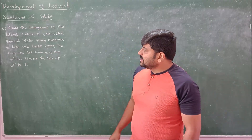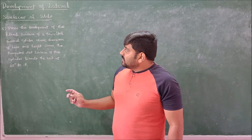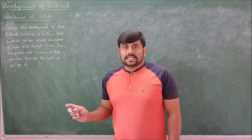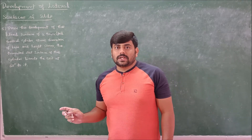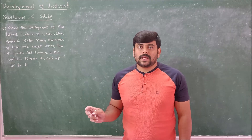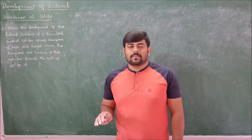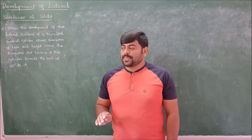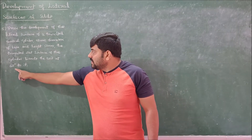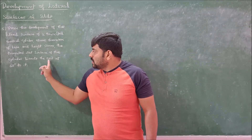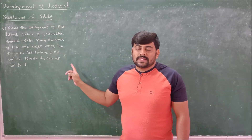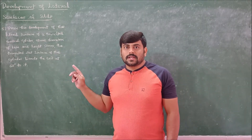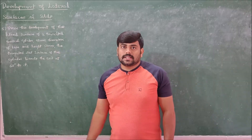We have a vertical cylinder and the development involves a truncation. If the cutting plane is inclined at a certain angle to the base or horizontal plane, we get a truncation. If it is parallel to the base, we get a frustum. The cutting plane is inclined at 60 degrees to the axis, which means it is inclined at 30 degrees to the base or horizontal plane. Therefore, we are getting a truncated cylinder.